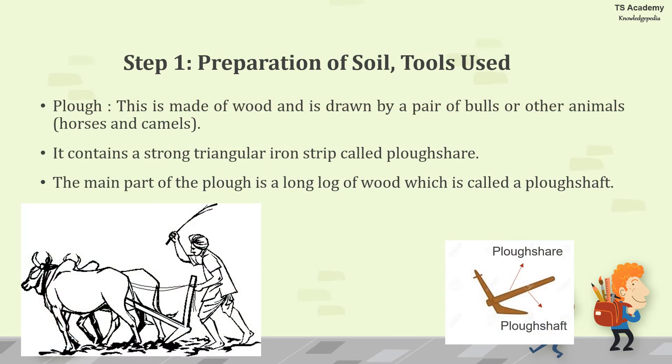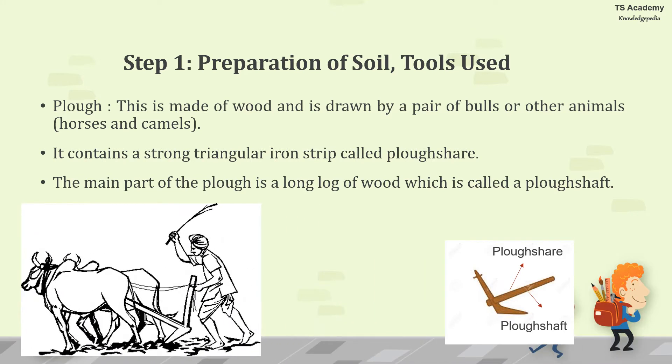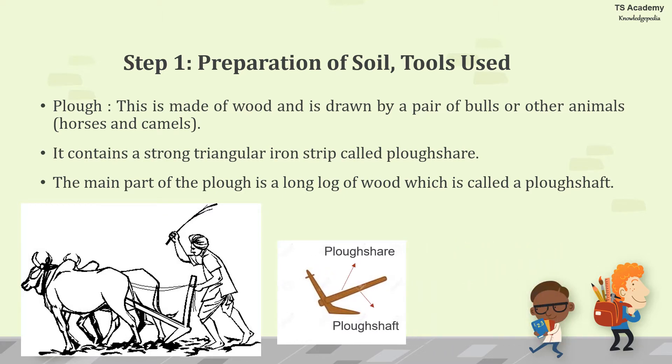What are the tools used for preparation of the soil? The first tool is the plow. It is made of wood and is drawn by a pair of bulls or other animals. It contains a strong triangular iron strip, which is known as the plowshare. The main part of the plow is a long log of wood, which is called the plow shaft.